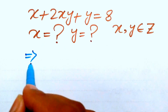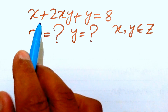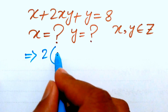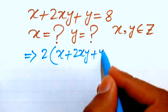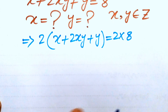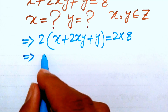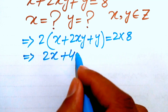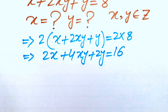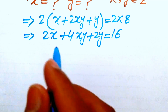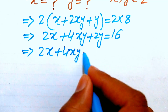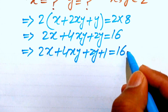The first thing we are going to do is multiply both sides of this equation by 2, giving us 2x plus 4xy plus 2y equals 16. In the next step, we add 1 to both sides, getting 2x plus 4xy plus 2y plus 1 equals 17.